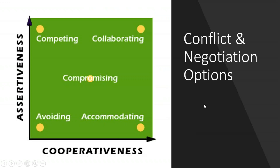Let's talk about the Thomas Kilmann model. It's been around for quite a few years, developed by Thomas and Kilmann. What you're seeing on your screen is two axes: one is assertiveness and the other is cooperativeness. These are the two dimensions we'll look at when we consider the five particular approaches. If you've got your diagnostic and completed it, now would be the time to have a look at it to see where you fit in.